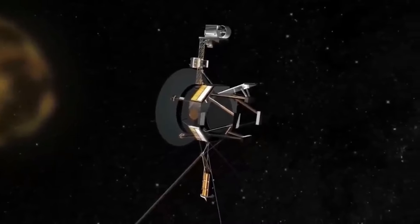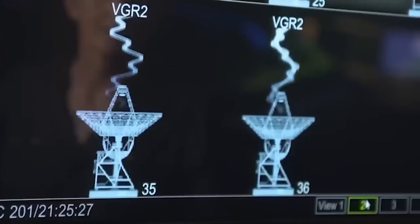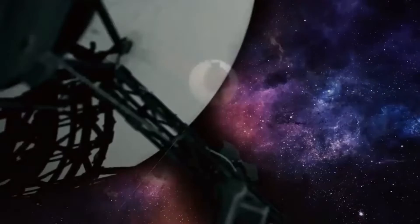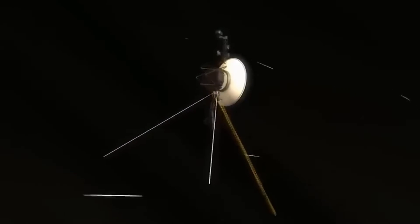The journey of Voyager 1 into interstellar space was not sudden, but rather it was gradual. It took several months for the spacecraft to cross the heliopause, which is the boundary between the heliosphere and interstellar space.